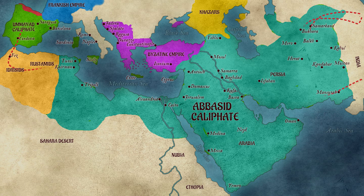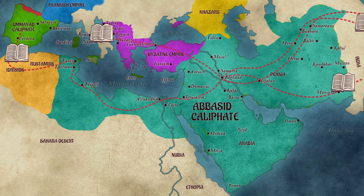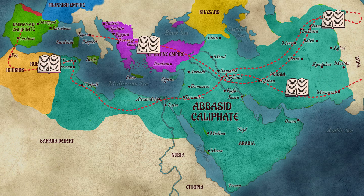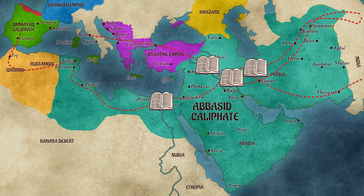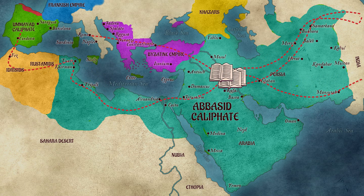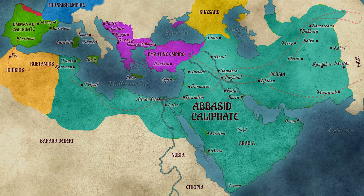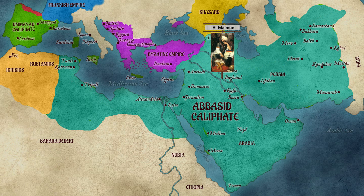After the foundation of Baghdad in the year 762, a massive programme of translation was started, in which great works of India, Persia and Greece were translated into Arabic. Baghdad became the centre of enlightenment, culture and learning, with the House of Wisdom established by Caliph Al-Mamun playing a role similar to the earlier Library of Alexandria.